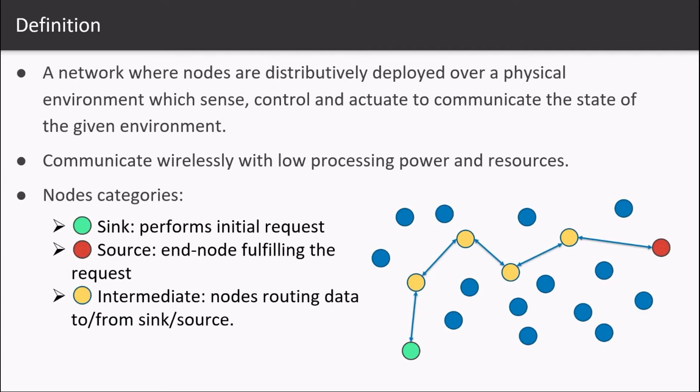Nodes are categorized as source node, sink node and the intermediate node. Every sensor can act as any node type depending upon the behavior performed by them.